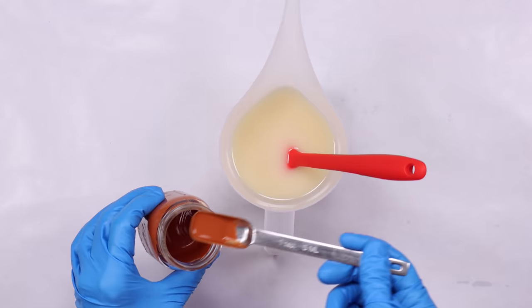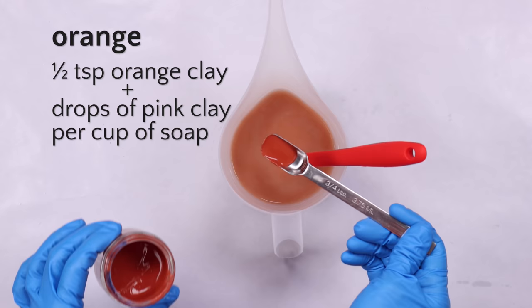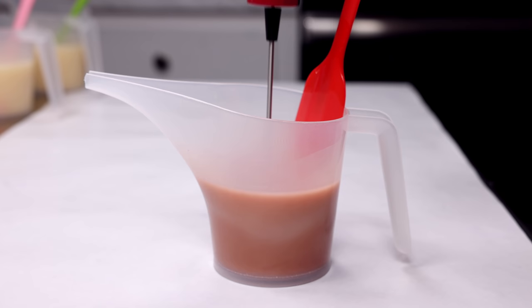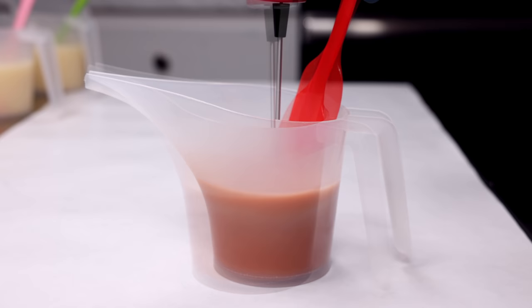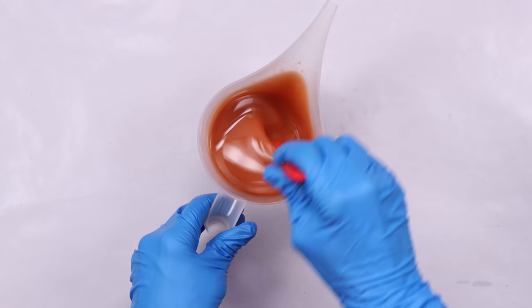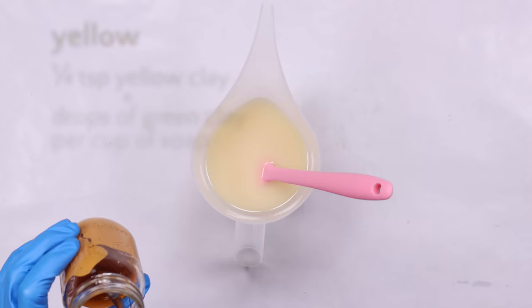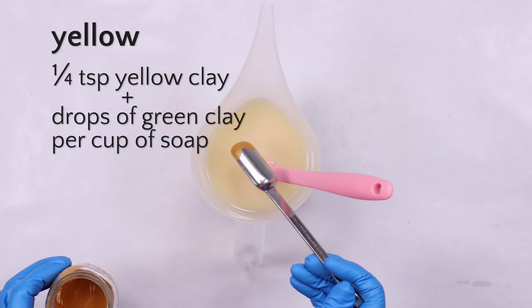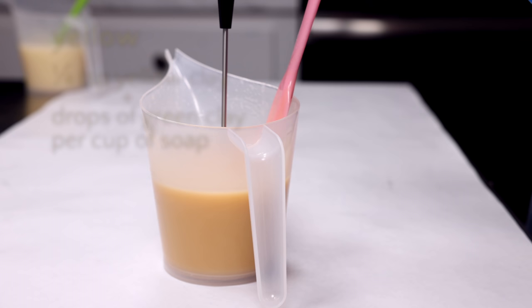To make the orange soap, I used a mixture of one-half teaspoon orange clay, plus a few drops of the red clay. For the yellow soap, I used about one-quarter teaspoon of the yellow clay, and just a few drops of the green clay.